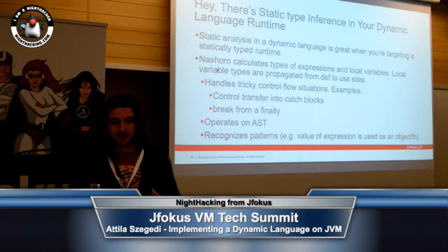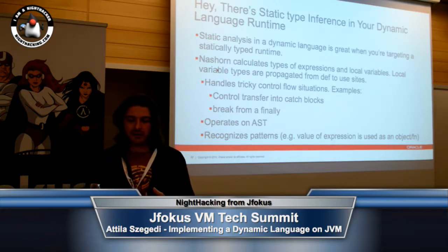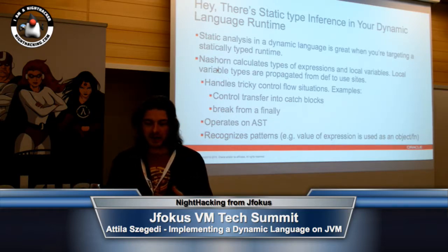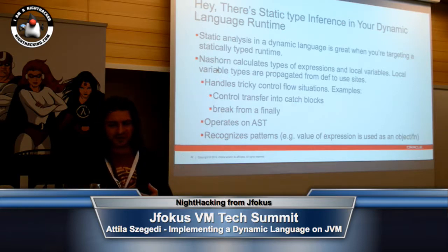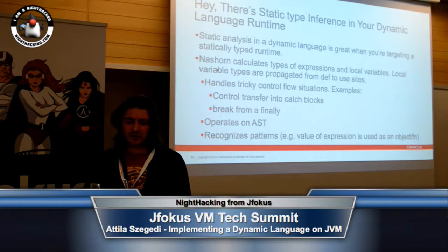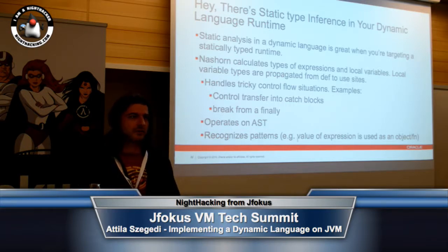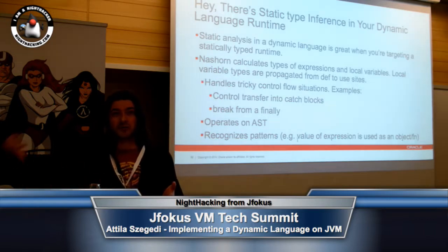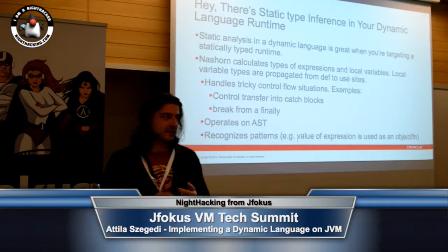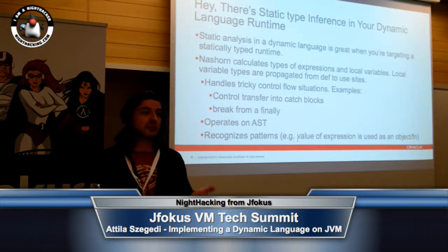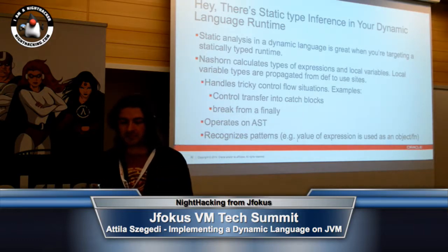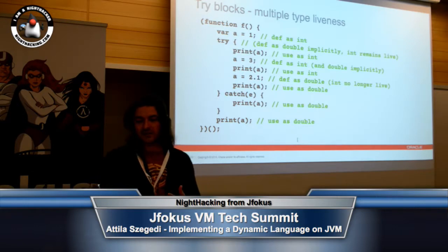It is super beneficial because we are targeting a statically typed runtime — bytecode is typed. So Nashorn now calculates types for expressions and local variables, and types are propagated. It handles all kinds of tricky control situations, control flow to catch blocks, breaks from finally, whatever. We also recognize if a value of an expression is used as an object. So if you evaluate an expression but later on you will be retrieving a property from it or calling it as a function, then we won't presume that it will be returned as an int ever. We will immediately go to — let's make sure this is an object.